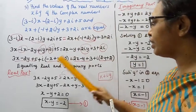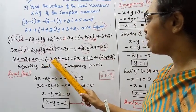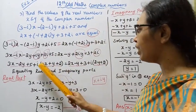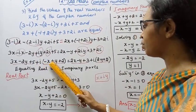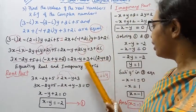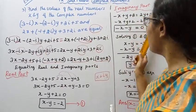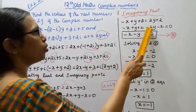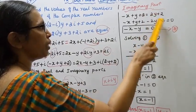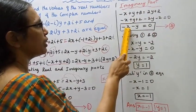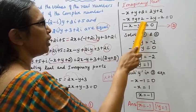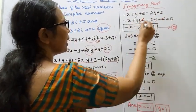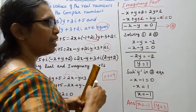Equating the imaginary parts: minus x plus y plus 2 equals 2y plus 2. Rearranging: minus x plus y plus 2 minus 2y minus 2 equals 0, the 2s cancel, giving minus x minus y equals 0. This is the second equation.